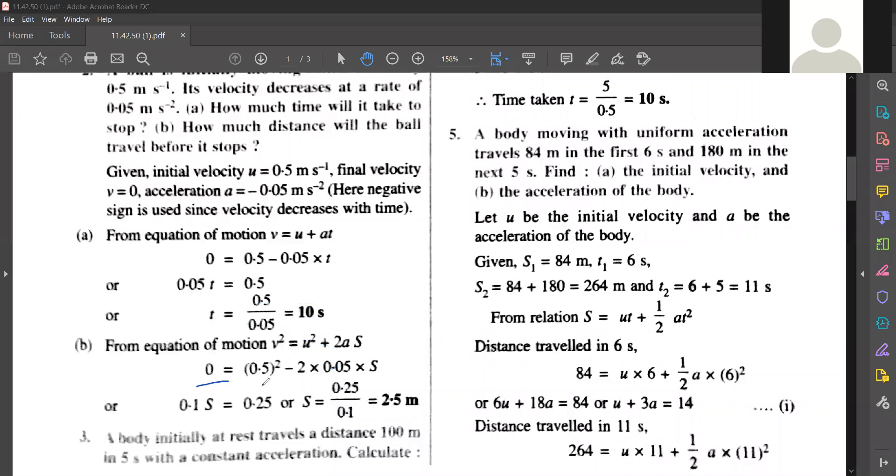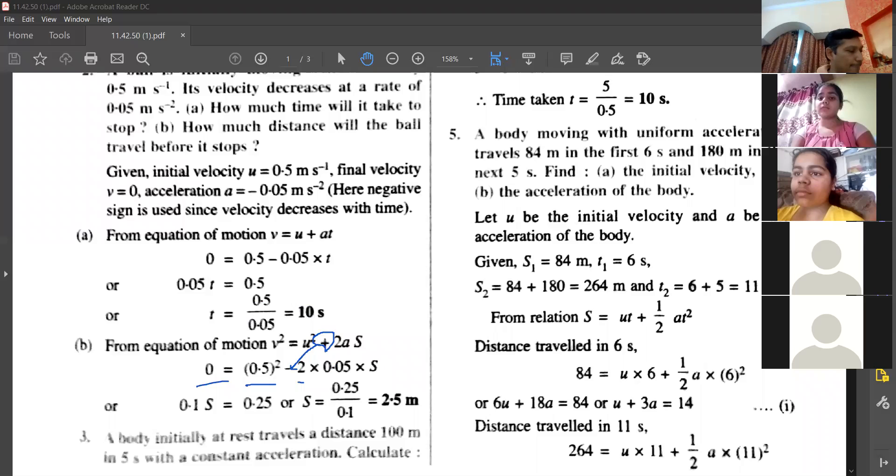Here, u as 0.5, 2 into, now you will ask me, this minus sign came from where? Here is plus and minus sign. Here is minus sign. Who will tell me? Now tell me, Shravani. Sir, we have taken retardation. Yes, because body is retarding.